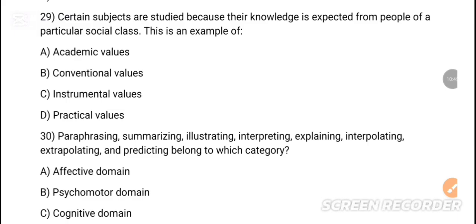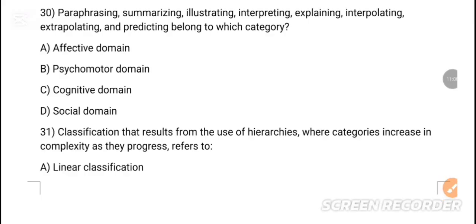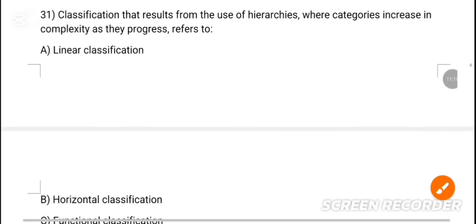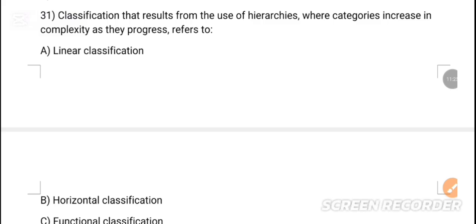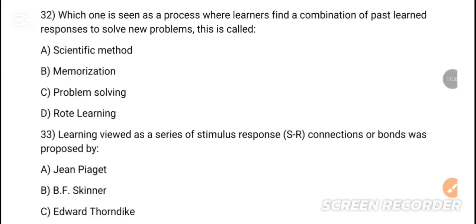MCQ 29: Certain objects are studied because knowledge is expected from people of particular social classes. This is an example of conventional video. Option B is the correct answer. MCQ 30: Preparing, summarizing, illustrating, and interpreting explanations — option C is the correct answer — cognitive domain. MCQ 31: Classification that results from the use of hierarchy, particularly increasing in complexity — option D is the correct answer — vertical classification.